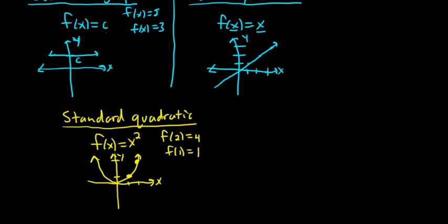And if you plug in a negative 2, you're going to get a positive 4 because it's being squared. So you get negative 2 squared, which is 4. So you do get the same thing on both sides. This is an example of what's called an even function. It's symmetric across the y-axis.